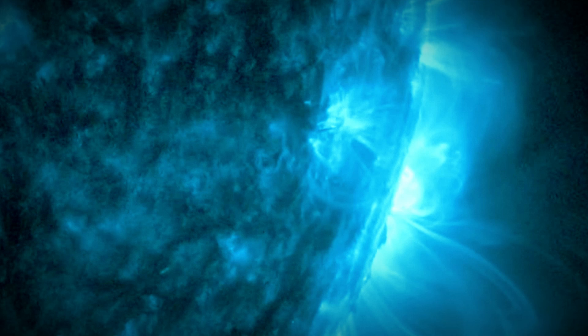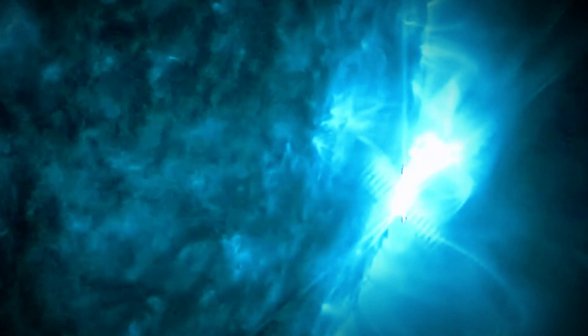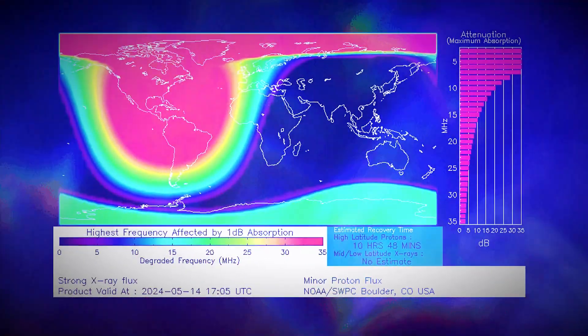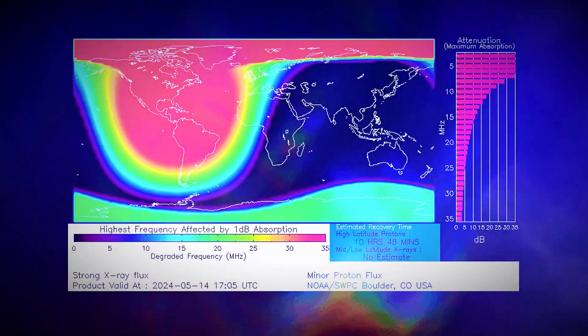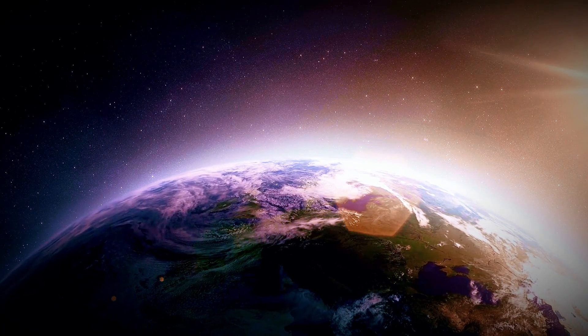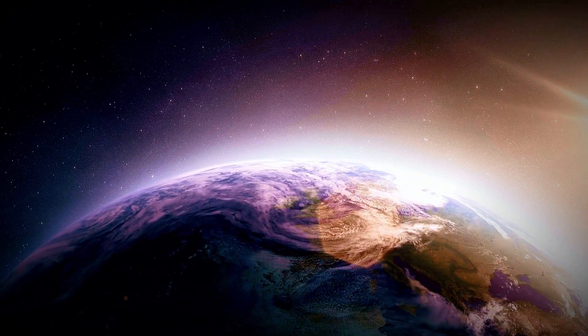Despite this, the flare has caused significant radio disruptions. A 10-CM radio burst, lasting 7 minutes, with a peak flux of 1100 SFU was recorded, indicating substantial radio noise that can interfere with radar, GPS, and satellite communications. Reports confirm radio blackouts over the Americas, East Pacific, and Northern Atlantic.